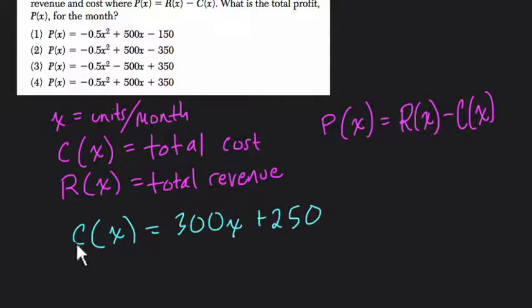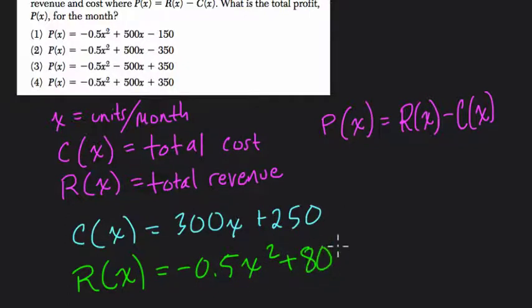So c of x equals 300x plus 250. And actually, I'm going to move this down because we're subtracting that from r of x. Actually, I'll leave it right here. And then r of x, I'll write in green for money, right, revenue, is negative 0.5x squared plus 800x minus 100.